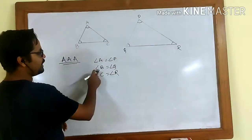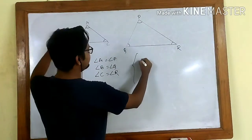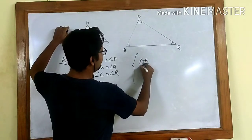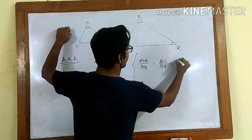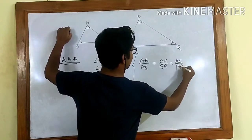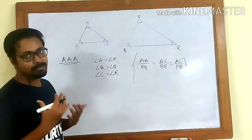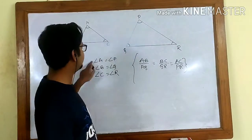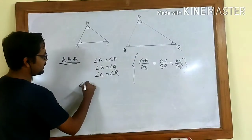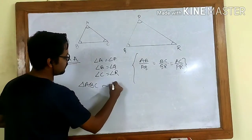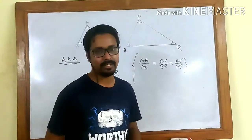If we have angle A equal to P, B equal to Q, and C equal to R, automatically we will find that the ratio of AB to PQ equals the ratio of BC to QR, which equals the ratio of AC to PR. So if we can show by any means that in two triangles the angles are equal, then the two triangles will be similar — triangle ABC will be similar to triangle PQR. That is the first criteria: Angle-Angle-Angle.